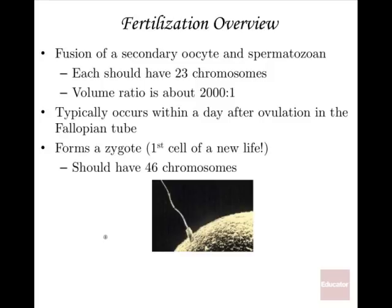Fertilization is the fusion of a secondary oocyte and a spermatozoan. The secondary oocyte comes from an oogonium — kind of like the stem cell that makes eggs. The secondary oocyte is a more technical term than just calling it an egg or ovum. It's actually not completely done with meiosis; once the spermatozoan makes contact, it will finish meiosis and become a full-fledged ovum. Each of these should have 23 chromosomes — the haploid number.